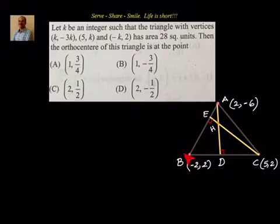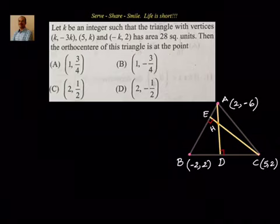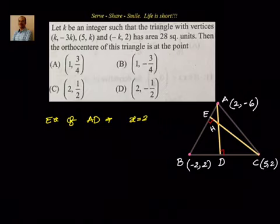We take altitude AD because BC is a horizontal line with constant y-coordinate, meaning AD must be a vertical line. On a vertical line, the x-coordinate is constant. Since vertex A has x-coordinate 2, the equation of AD is x = 2, meaning the orthocenter also has x-coordinate 2.